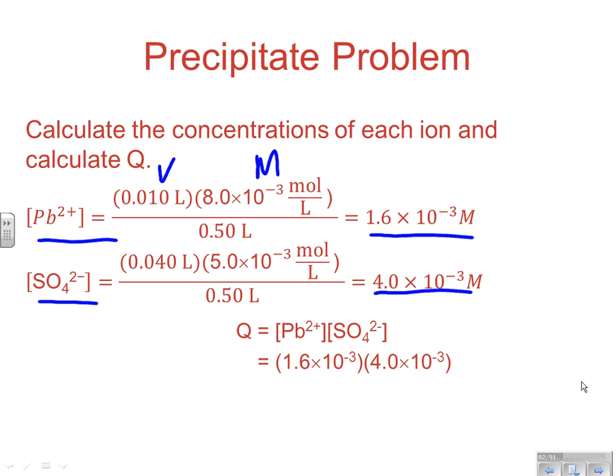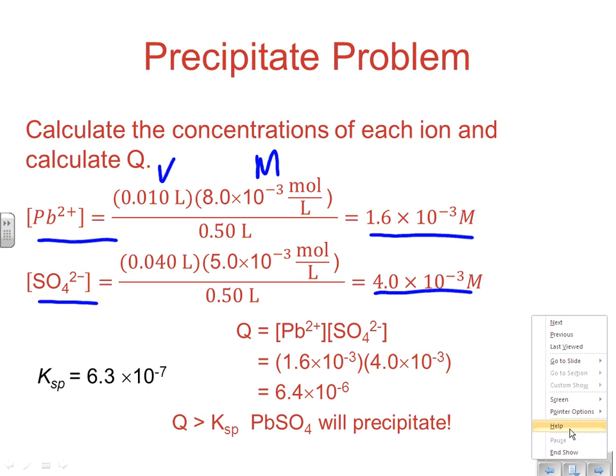1.6 times 10^-3 times 4.0 times 10^-3 gives me 6.4 times 10^-6. So that's our Q value. We're looking at how Q compares to K. Since Ksp was 6.3 times 10^-7, that means Q is greater than K. We have enough ions to reach saturation. We're going to get a precipitate forming. And that ends our six set of notes over Chapter 17.